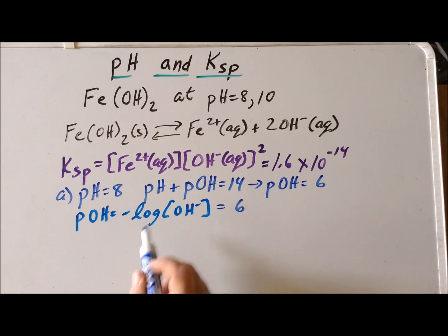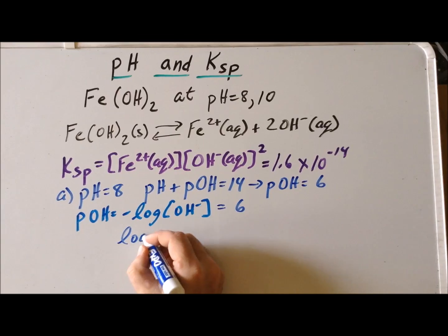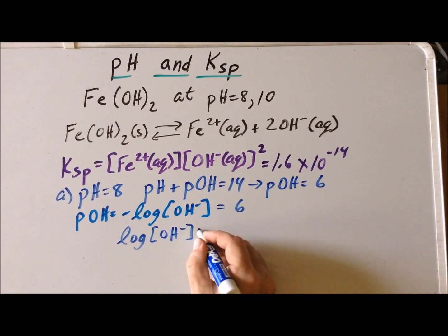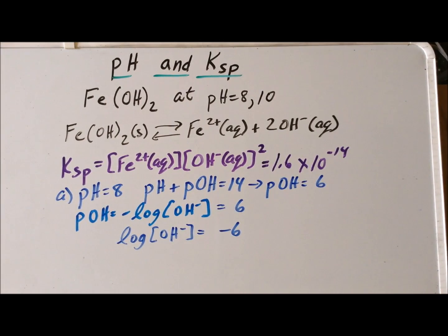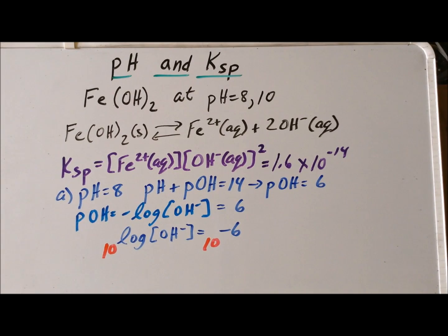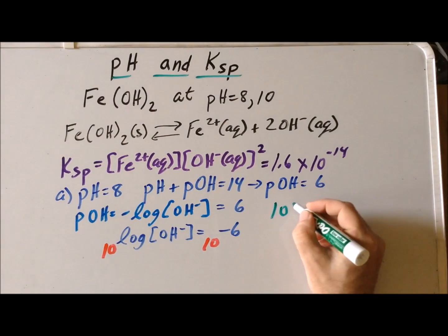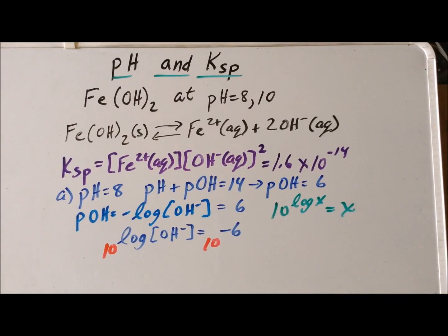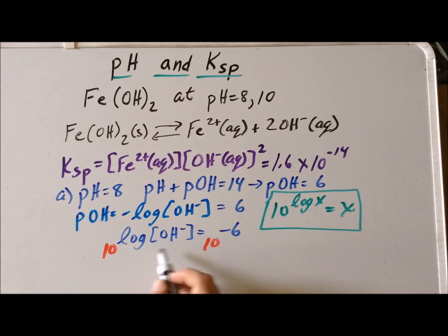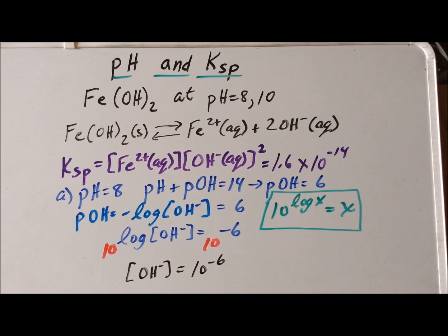For convenience, we multiply each side of the pOH equation by −1, which tells us that log[OH⁻] = −6. We then raise each side as a power of 10, utilizing the logarithm property that 10^(log x) = x. So 10^(log[OH⁻]) is simply [OH⁻], and the right-hand side gives us 10⁻⁶. Thus at pH 8, the concentration of hydroxide ion is 10⁻⁶ M.